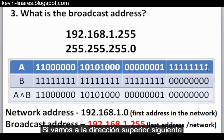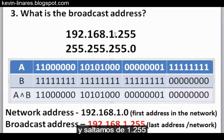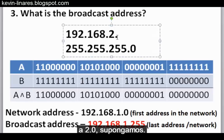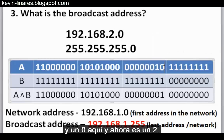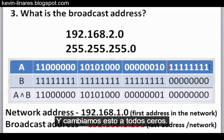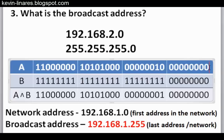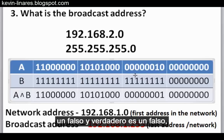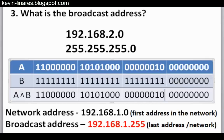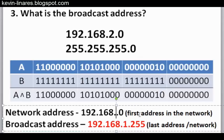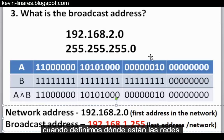If we jump up to the next higher address — 192.168.2.0 — and perform the ANDing operation, we get a different result. The ANDing now produces a network address of 192.168.2.0, the 2 network. This demonstrates how important ANDing is to defining exactly where the network boundaries lie.